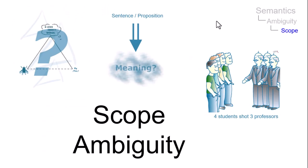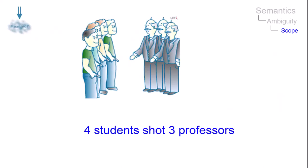Scope ambiguity may occur in constructions with at least two quantifiers, where one can be placed within the scope of the other in different ways.